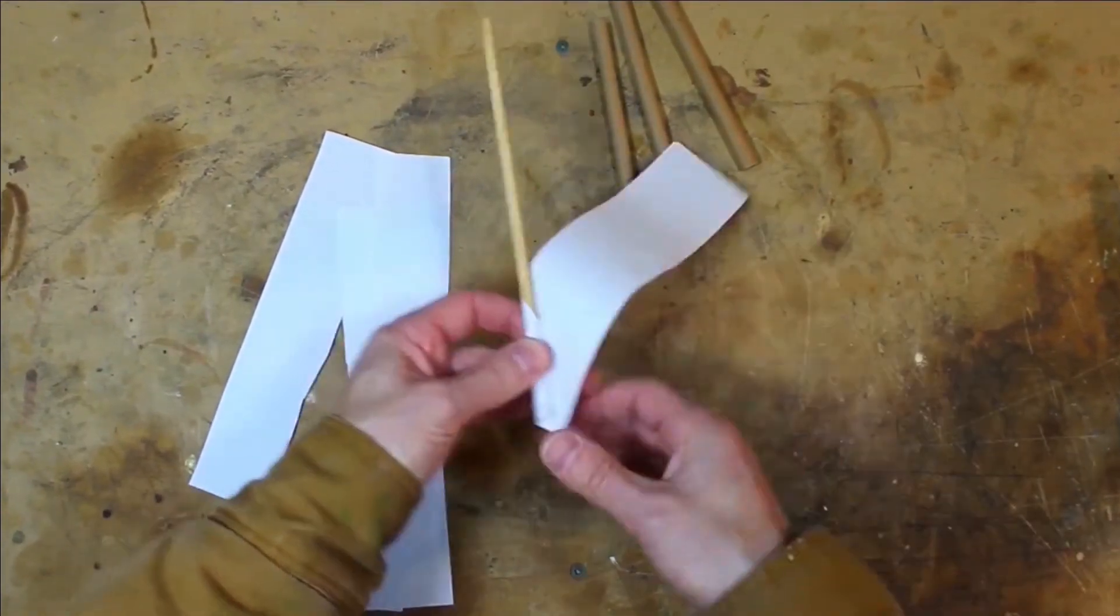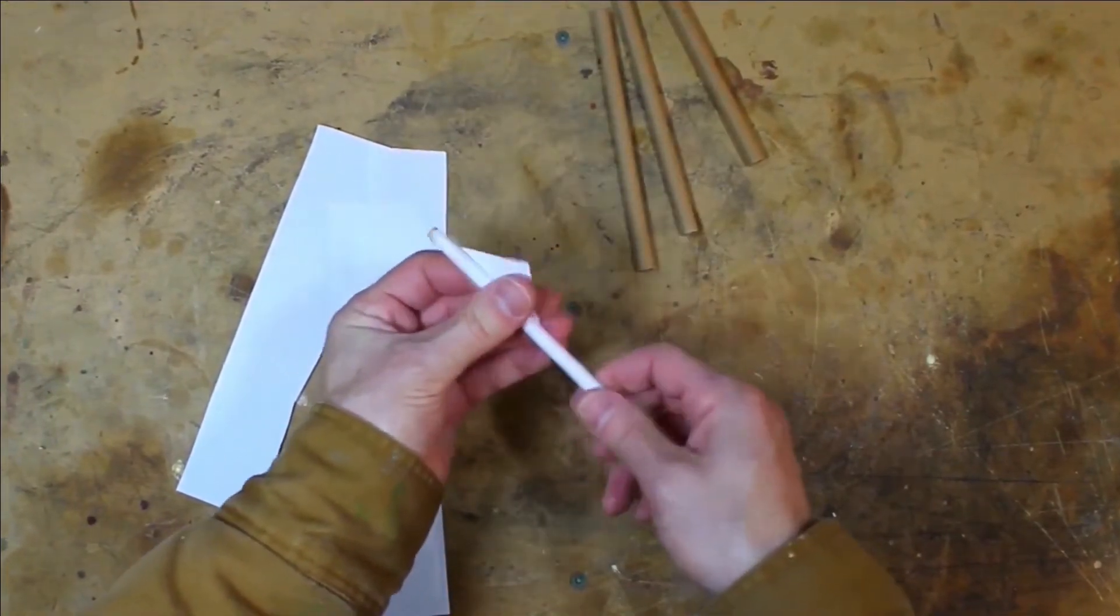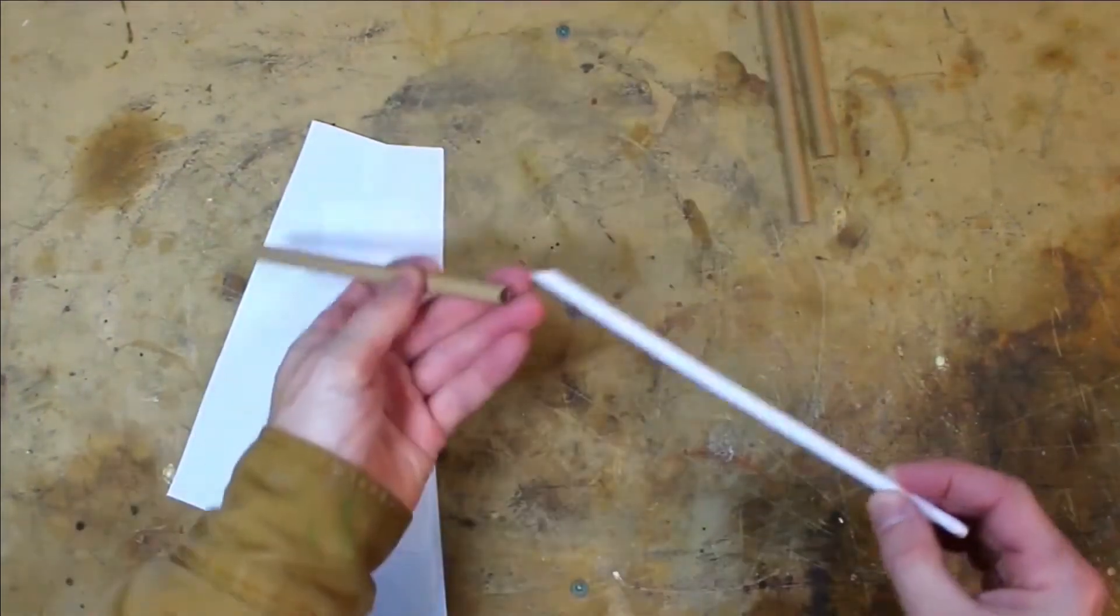It's important to wrap the paper as tightly as possible, ensuring there is a little overlap as you go. It can then be inserted into a tube.